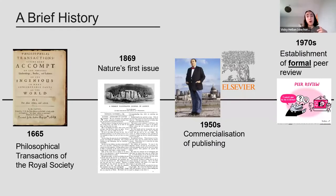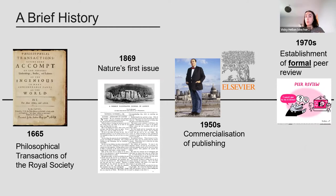I wanted to start with a brief history of scientific publishing, mainly with a UK lens, but some of this applies internationally too. The first ever scientific journal was in 1665, called Philosophical Transactions, published by the Royal Society. It published letters about scientific observations and experiments, and these reports and advances were shared at Royal Society meetings. It's interesting to see that openness and sharing between scientists was key right from the beginning.